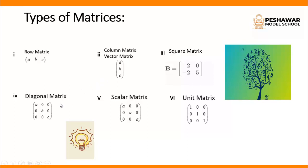Number four is the diagonal matrix. A diagonal matrix is a matrix where the main diagonal elements are non-zero — given as A, B, and C — and all other elements are zero. Number five is the scalar matrix, where the main diagonal elements are all the same — for example, A, A, A — and other elements are zero. Number six is the unit matrix, where the main diagonal elements are all one.